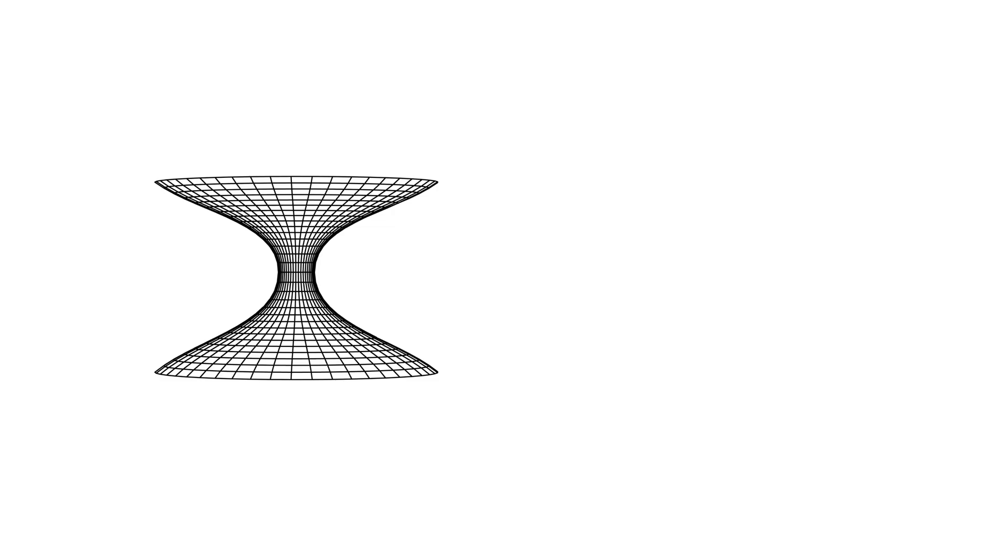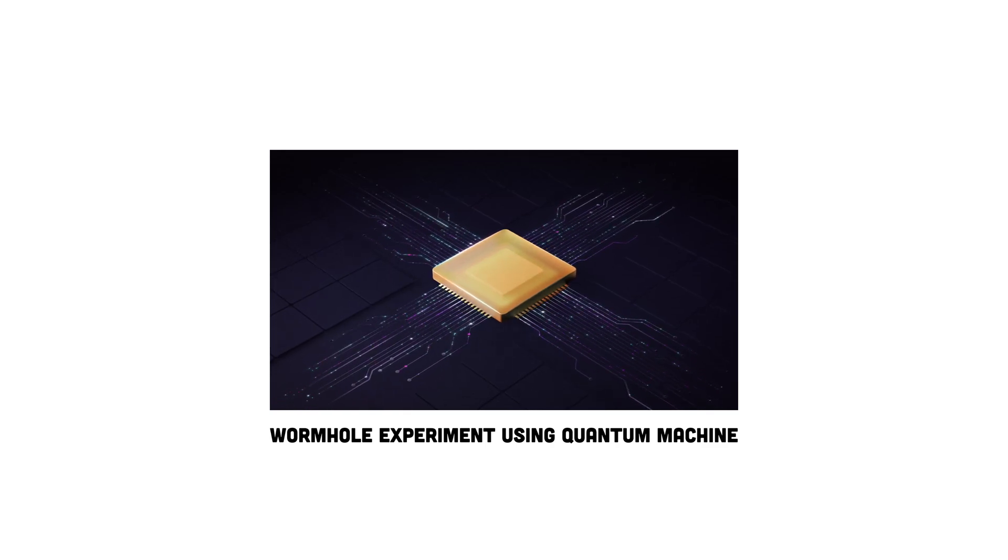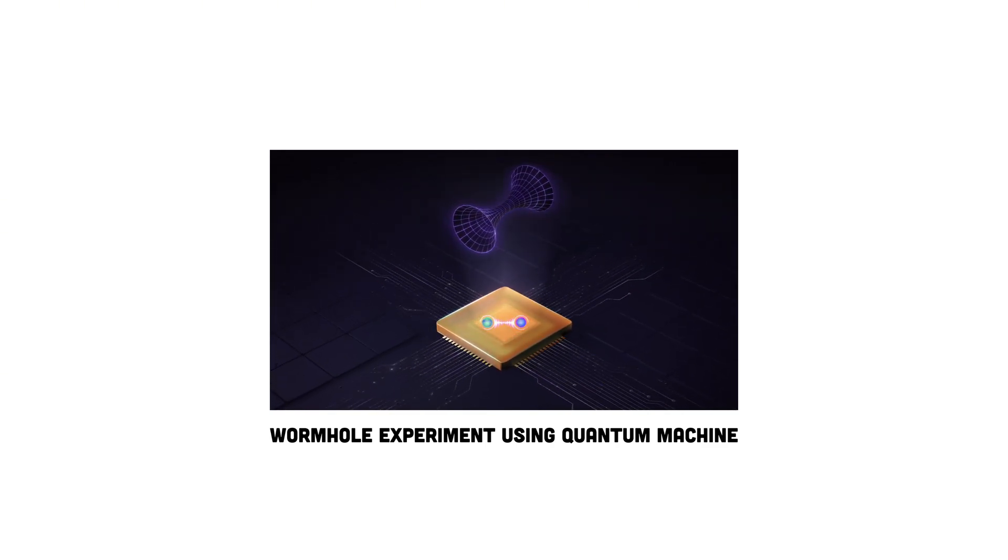Wormholes might theoretically form at the singularity of black holes within quantum fluctuations or along cosmic strings. We haven't actually observed any wormholes yet. They're still theoretical, but physicists are actively researching them. In 2022, scientists from Caltech and Google used the Sycamore quantum computer to simulate a very simplified version of a wormhole.